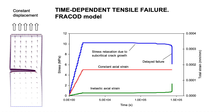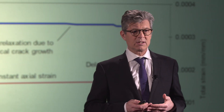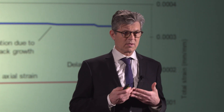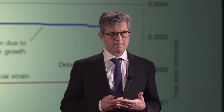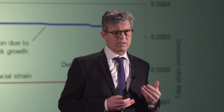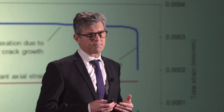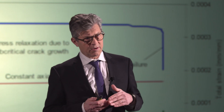The long-term stability of the rock mass is of interest, especially for nuclear waste management. The classical fracture theory states that a fracture is stable until it reaches a critical load. After this critical limit, it propagates very fast.